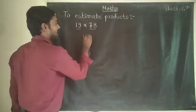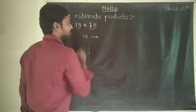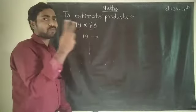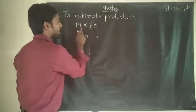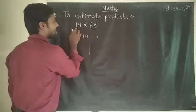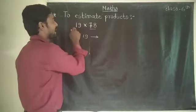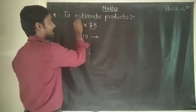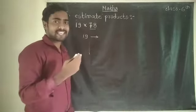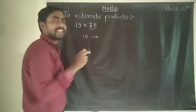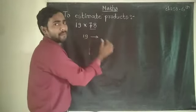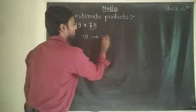We have to find the rounding of 19 first. Now 19 is a two-digit number, so the highest place is the tens place. That means we have to find the nearest tens. 19 is between 10 and 20. So which ten is it closest to? Obviously 19 is close to 20, so the rounding of 10 for 19 is 20.